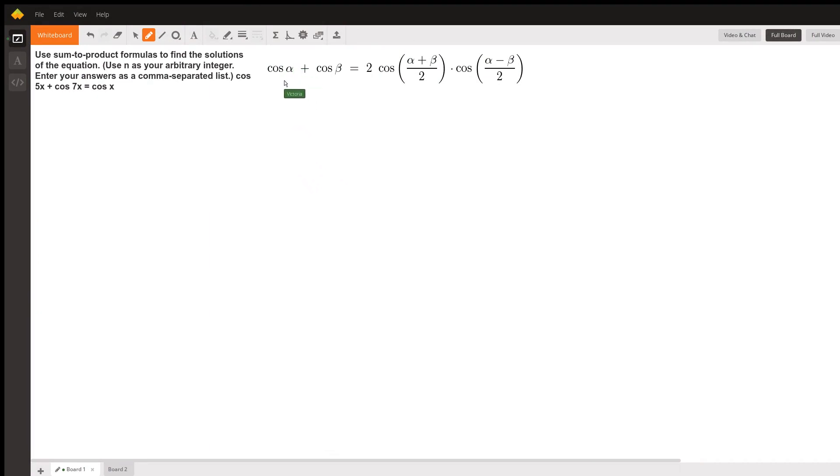So here's the sum-to-product formula that we're looking for, because we have a cosine of 5x plus a cosine of 7x, which means that for us, our alpha is 5x, because the first one is cosine of 5x, and then our beta is 7x.